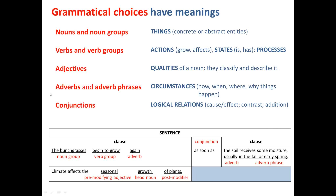Adverbs and adverb phrases give more information about the verb — for example, 'bunch grasses begin to grow again.' When does the growing happen? This is circumstantial information. It tells us how and when, where, and why things happen. We see several adverbs here: usually in the fall or early spring, and so forth.